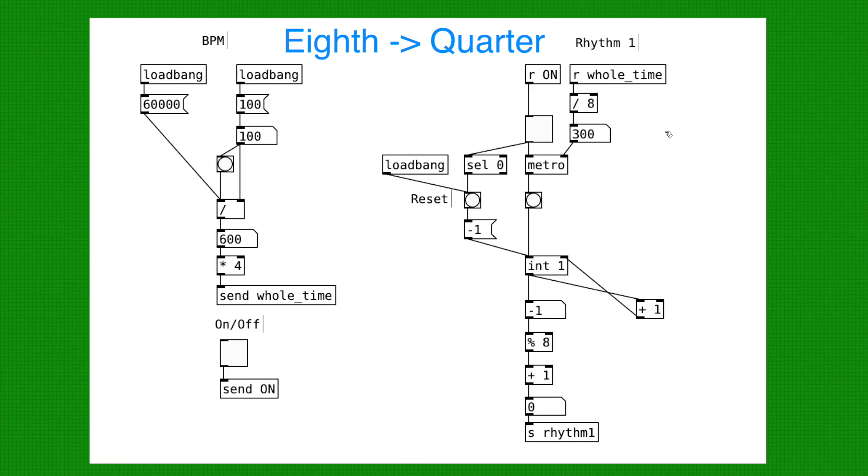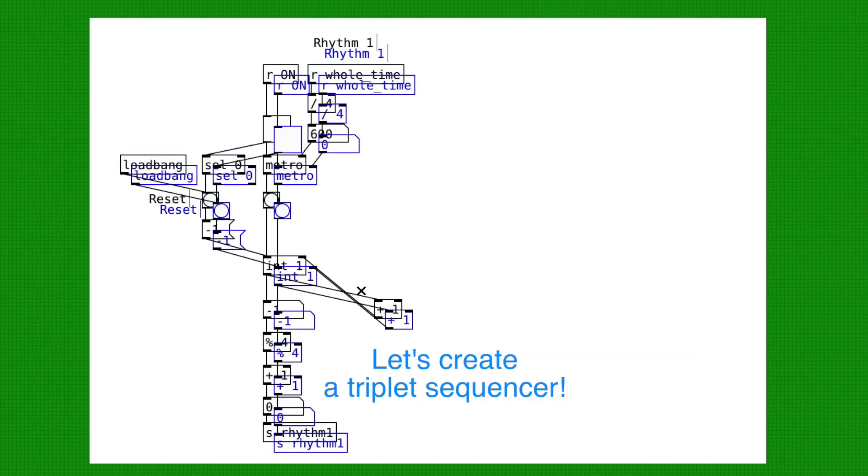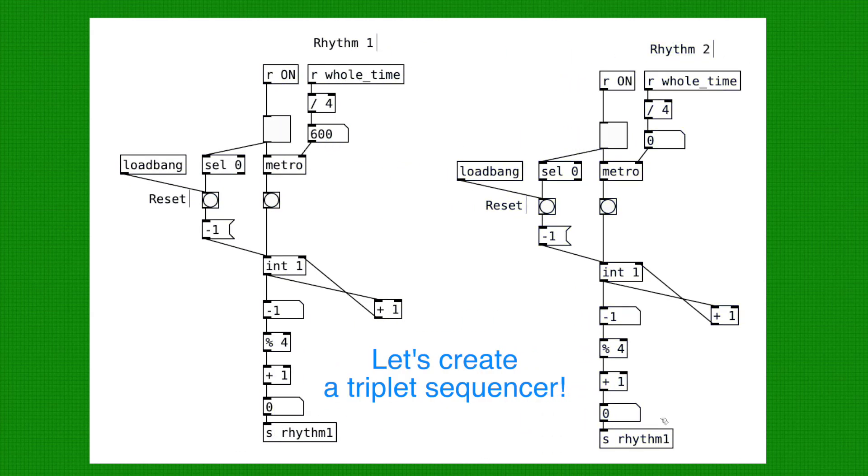First step is to modify these so that we get a quarter note. Okay, copy and paste this whole thing. What we want to do is fit 3 notes in the same amount of time that 4 quarter notes are played. So we simply add a divide by 3 right here and change this to a 1. We have the whole note time here and we divide that by 3, which gives us a triplet.